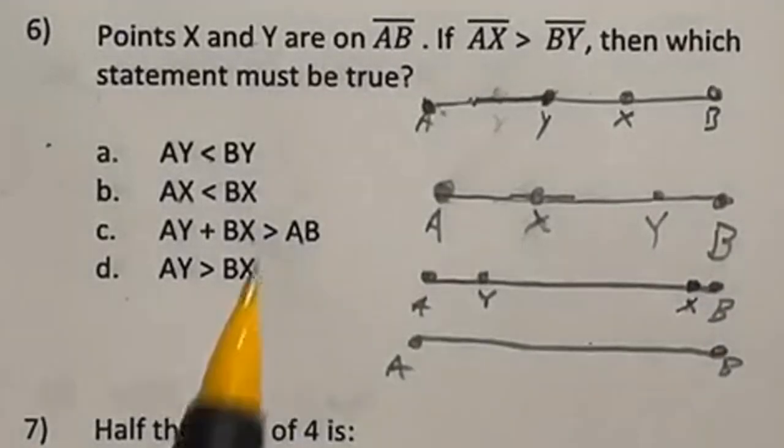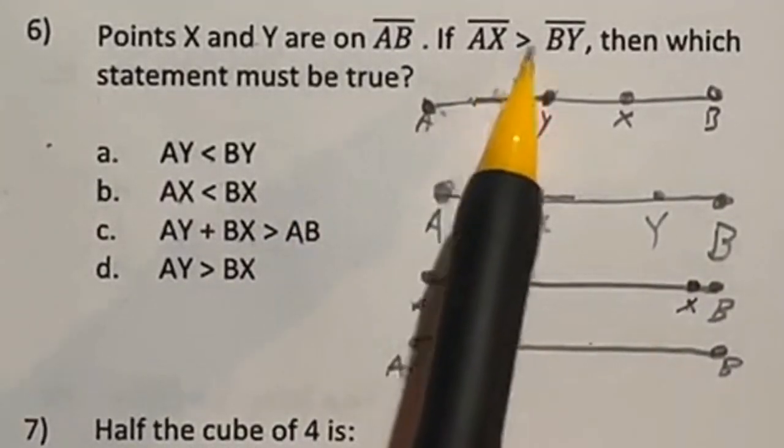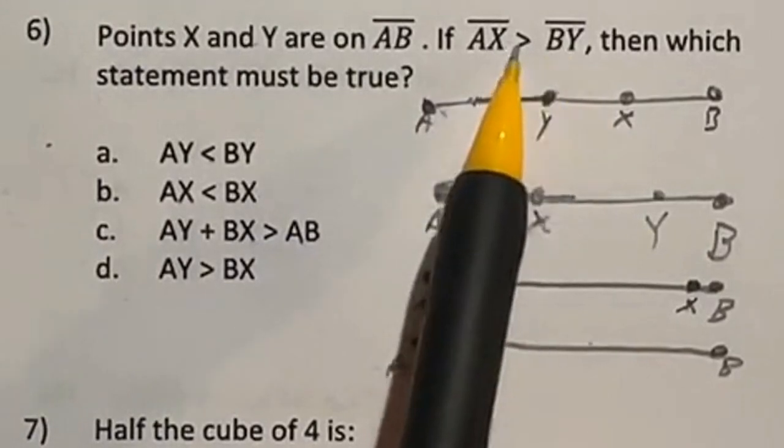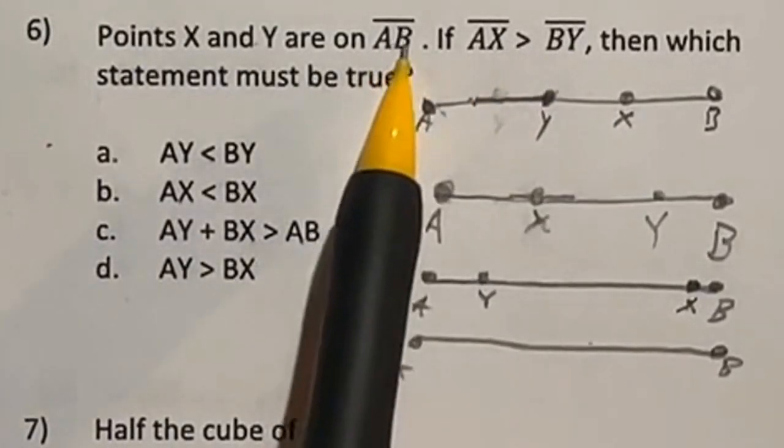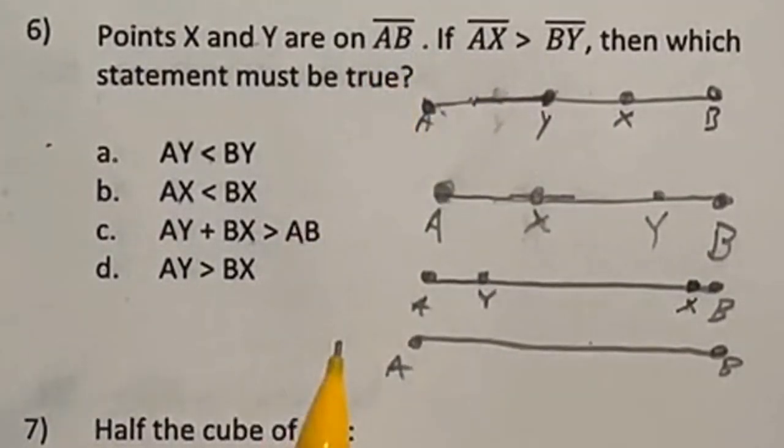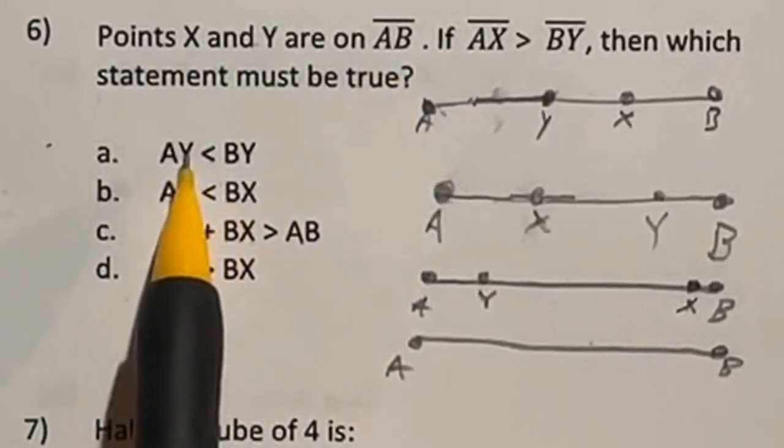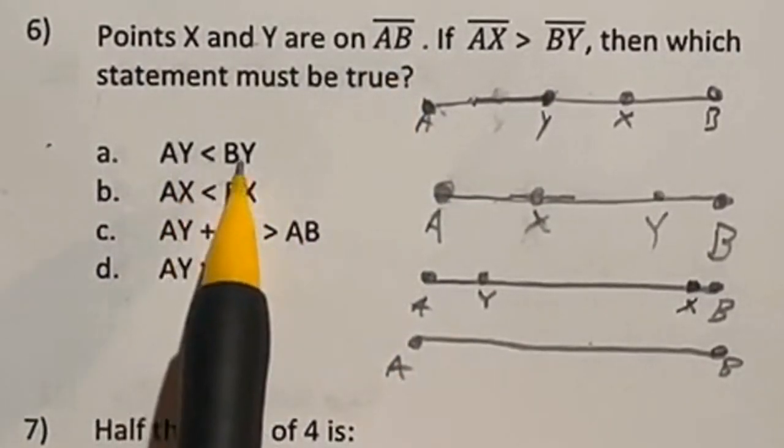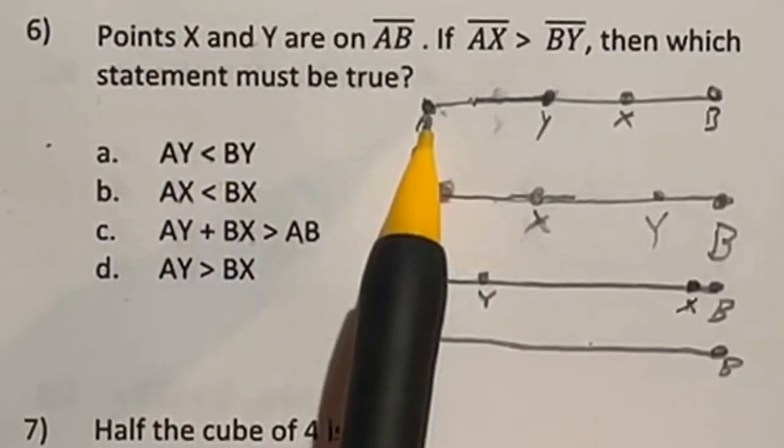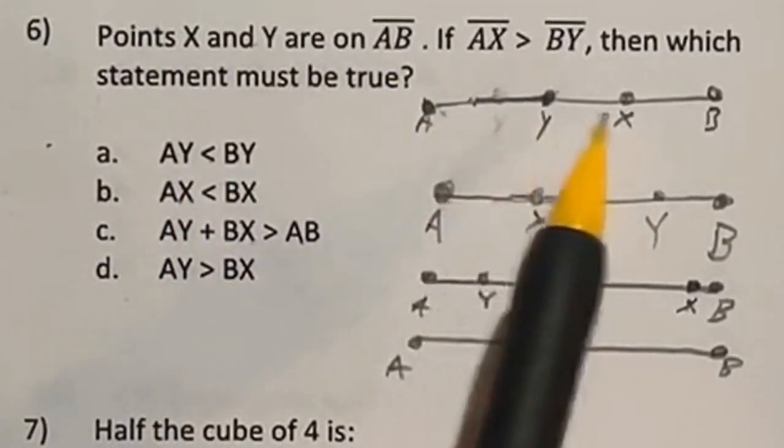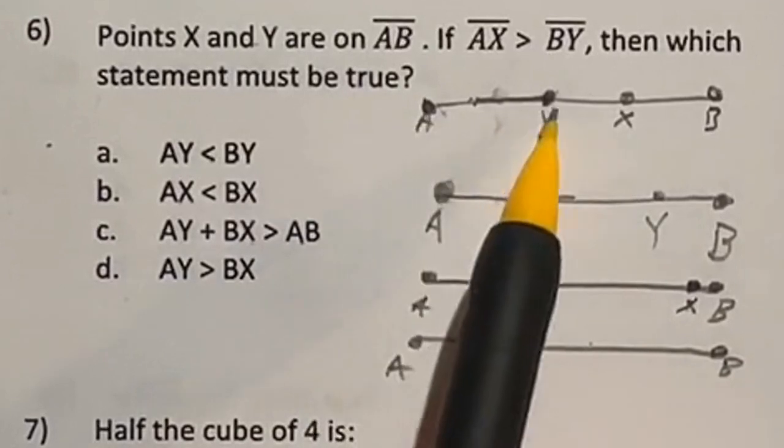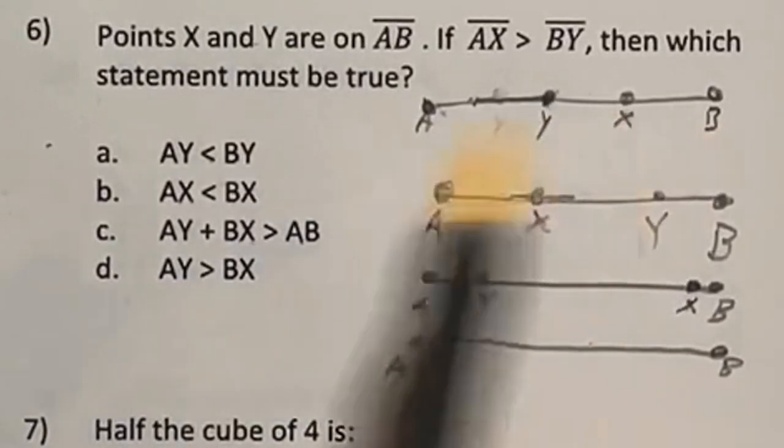So number six is a little bit tricky. It says here that AX is larger than BY, where X and Y are both on this line segment AB. So I actually just did counterexamples for each of these first three to show you why they're not true. AY could be less than BY. Looking here, in this case, I created X and Y on here. And you can see here that AY, in this case, is actually bigger than XB. So that one's out.